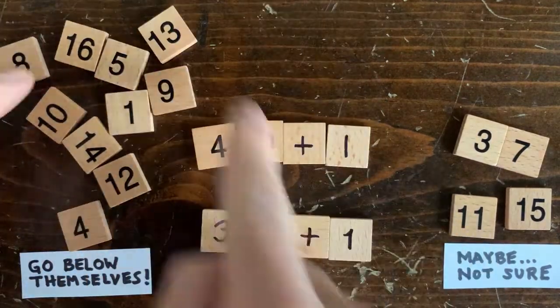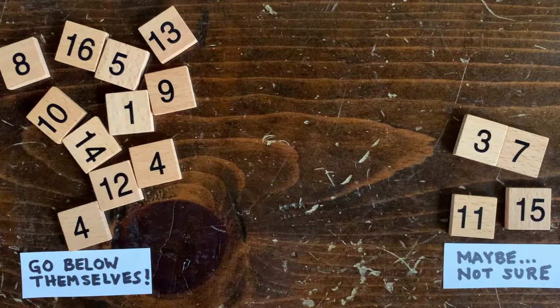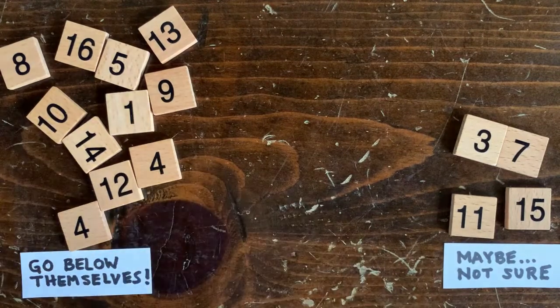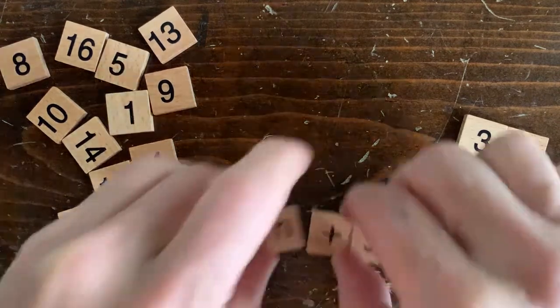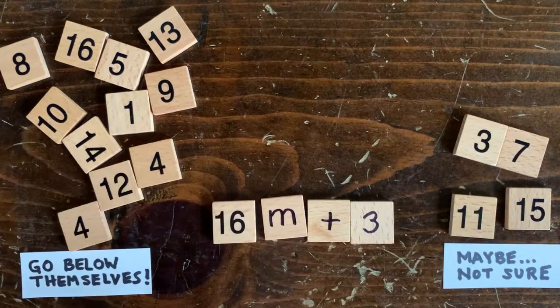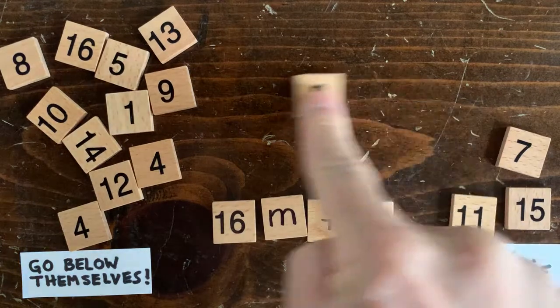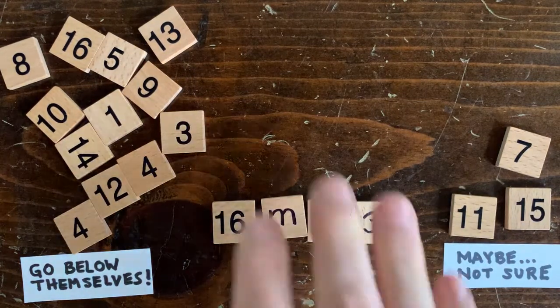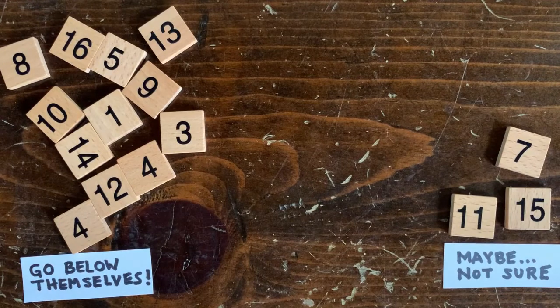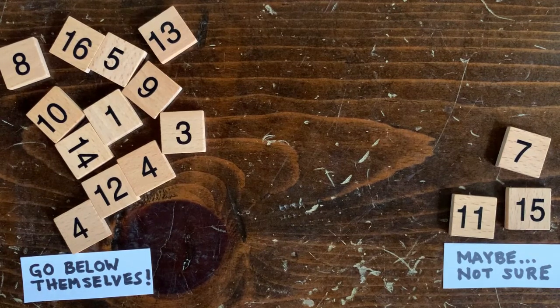Now, together with the evens, we've accounted for about three quarters of all numbers, all the way down the number line. And in fact, other odd numbers of the form 16m plus 3 also go below themselves in 6 steps. You can work that out on your own. So now we know that at least 93% of all numbers go below themselves.